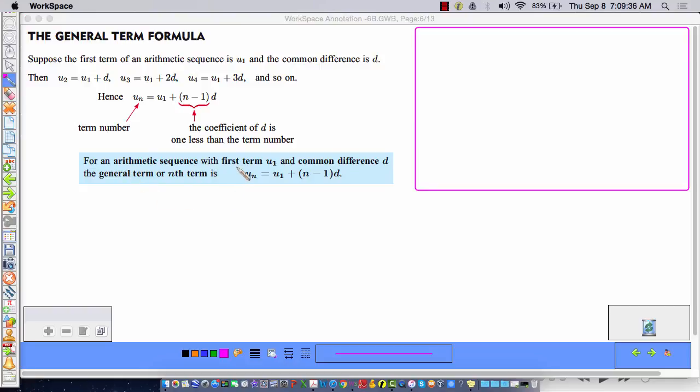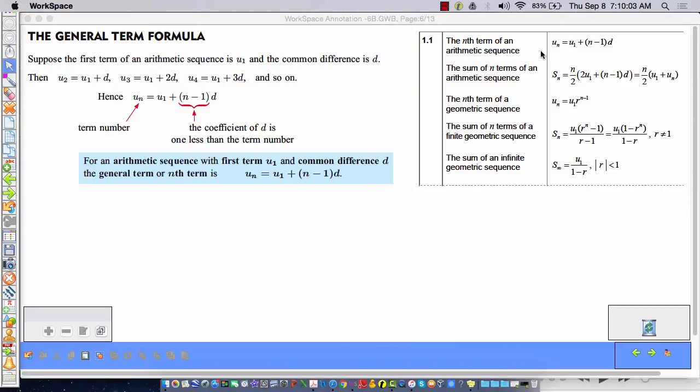And then we have the general term formula for an arithmetic sequence. And here it is. For an arithmetic sequence with first term u sub 1, right here, and common difference d, right here, the general term or nth term is given thusly. So if I wanted to find the 10th term, I would say u sub 10 equals the first term, whatever that is, plus 10 minus 1 multiplied by d. And all of that is given to you here on this handy dandy formula sheet. All kinds of series and sequence formulas. But right now we have this and you will always, always have this to use.